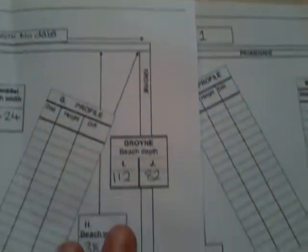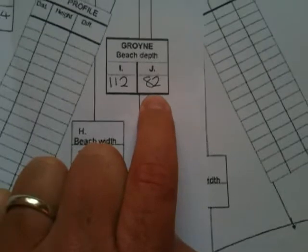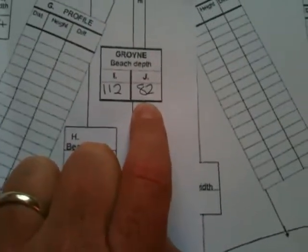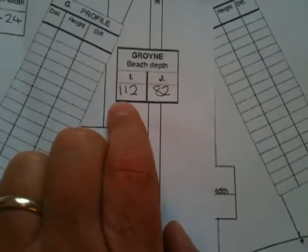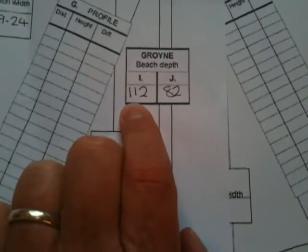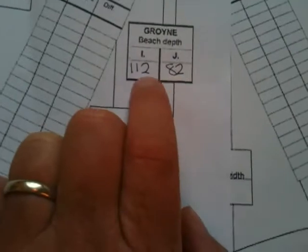The first groin we're going to measure — we couldn't measure that one, so it's going to be this one here, the groin between beach number 1 and beach number 2. And what that's telling us is that on the right-hand side they had to go down 82cm before they got to the beach, and on the left-hand side they had to go down 112cm before they got to the surface of the beach. So it was shallower on that side than that side.